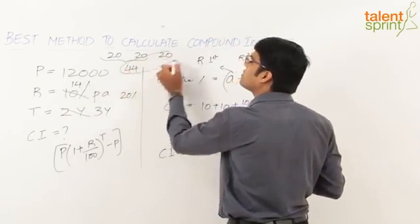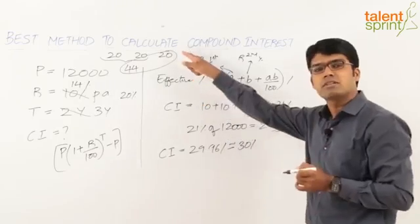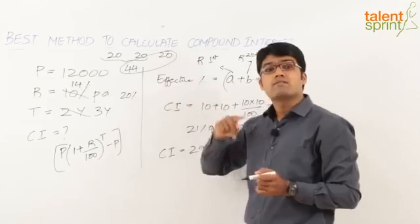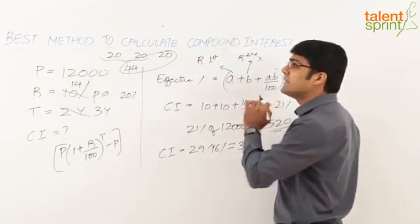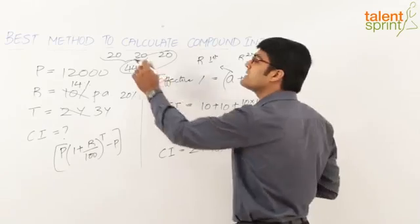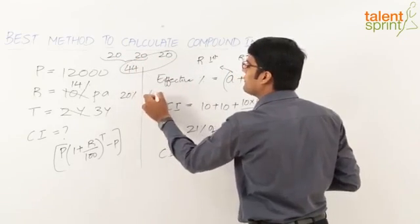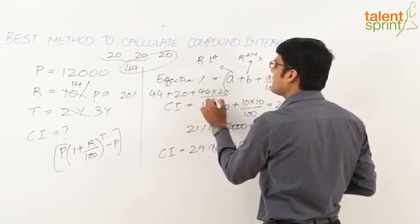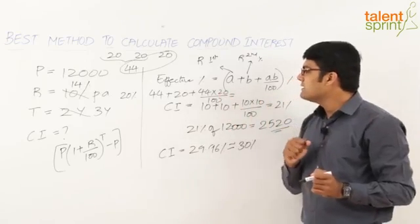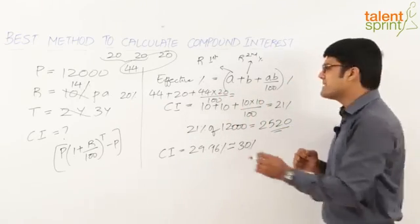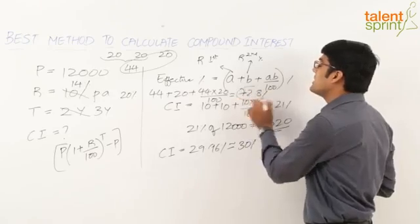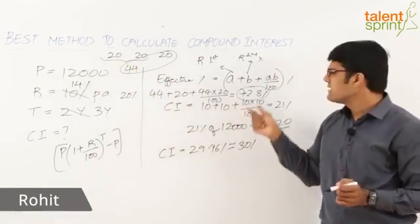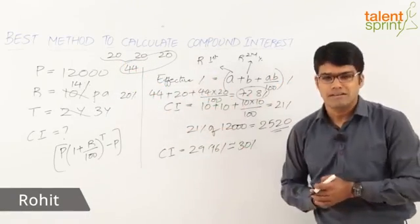Now take that 44% result and apply effective percentage again with the remaining 20% for the third year: 44 + 20 + (44 × 20)/100. So 44 + 20 is 64, and 44 × 20/100 is 8.8, giving us 72.8%. Therefore 72.8% is the total compound interest when the rate of interest is 20% per annum and the time period is 3 years. 72.8% of the principal gives the final answer.